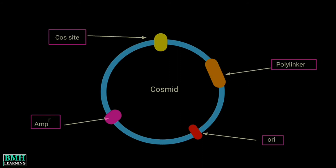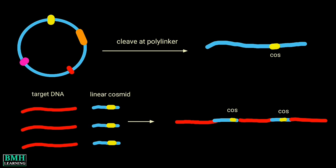Cosmids are predominantly plasmids with a bacterial ORI, an antibiotic selection marker, and a cloning site, but they carry one or two cos sites derived from bacteriophage lambda. The cloning procedure involves the generation of two vector arms using restriction enzymes.